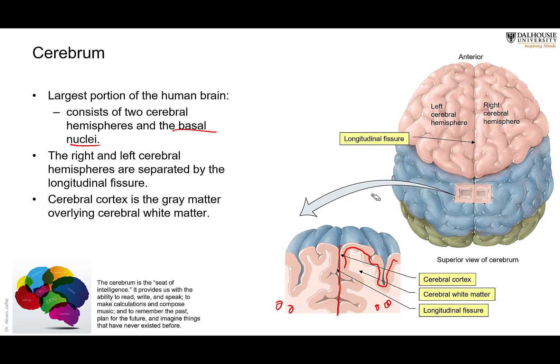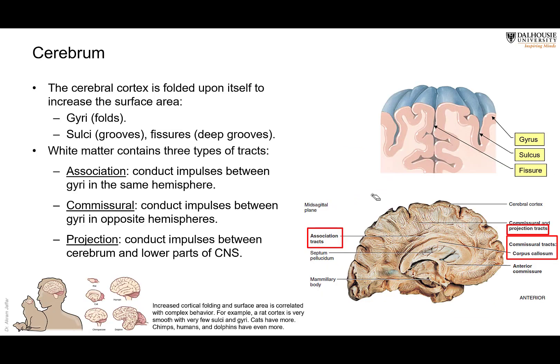In the cerebral cortex we have all these sensory, motor, and association areas — intelligence, personality, judgment — all taking place in the cerebral cortex. So we need a very large cerebral cortex. In fact, two-thirds of the cerebral cortex is hidden in the sulci and fissures of the brain. What you see on the surface of the brain is only one-third of the cerebral cortex.